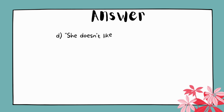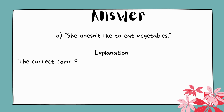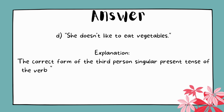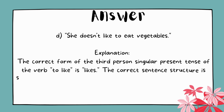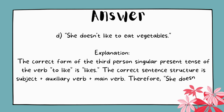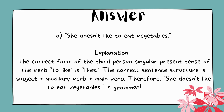The answer is D. She doesn't like to eat vegetables. Explanation: The correct form of the third person singular present tense of the verb 'to like' is 'likes.' The correct sentence structure is subject plus auxiliary verb plus main verb. Therefore, 'She doesn't like to eat vegetables' is grammatically correct.